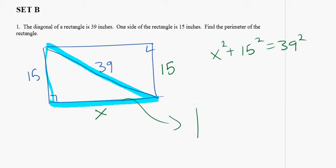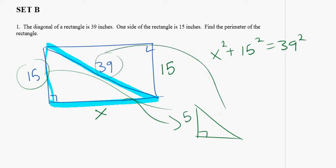But we can recognize that this triangle could be reduced if we divide each of these numbers by 3. So 15 divided by 3 is 5, 39 divided by 3 is 13. And I could use this reduced triangle to find the missing side here.